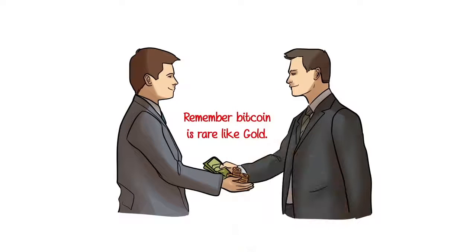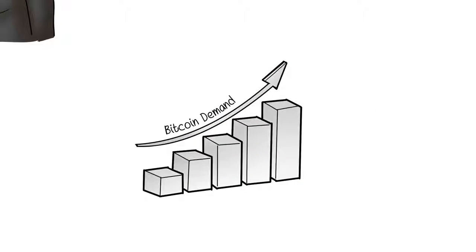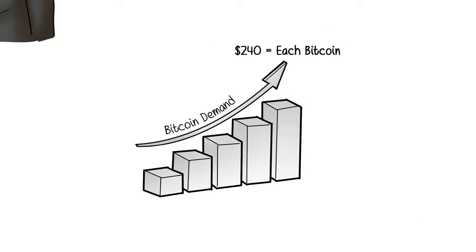Remember, Bitcoin is rare like gold. At that point, people started offering higher prices to buy it. It actually took over a year and a half for Bitcoin to go from being an idea to being worth 10 cents for one Bitcoin. At the time of this video being made, it's been 5 more years and the price has gone from 10 cents to about $240. That is a multiple of 2,400.